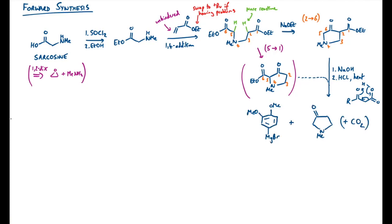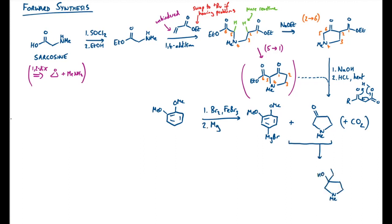At this stage we need the Grignard reagent, which we can make from bromination of the benzene ring followed by magnesium metal. Adding these two together gives the alcohol, and that should be super easy to dehydrate with acid. This is a really good setup for an E1-type elimination — a carbocation there would be stabilized by the oxygen lone pairs.